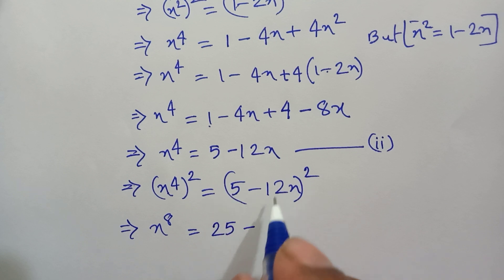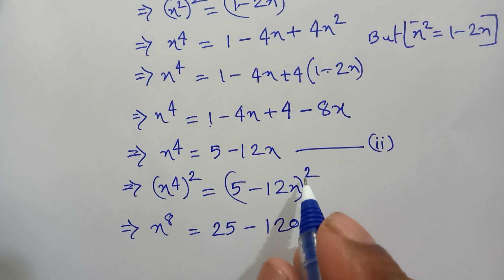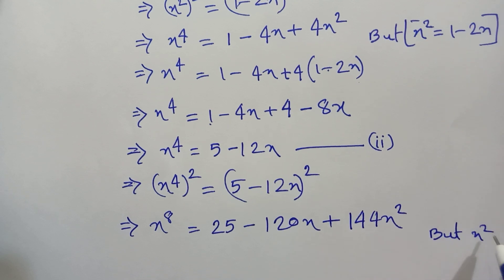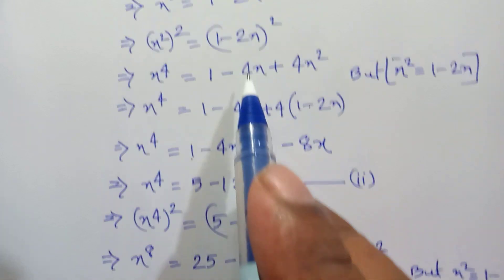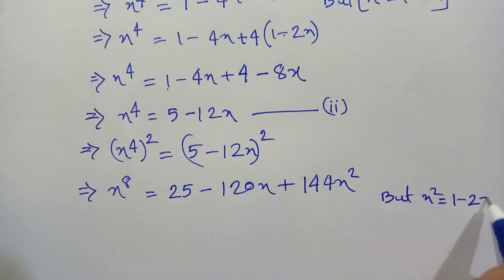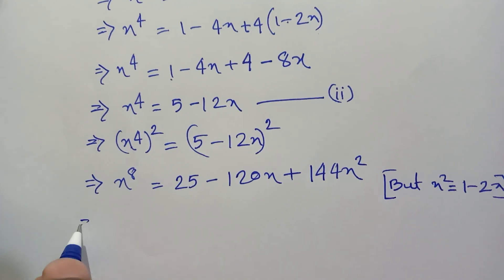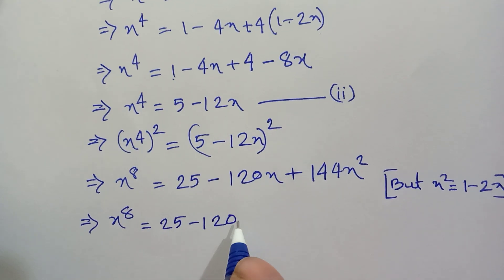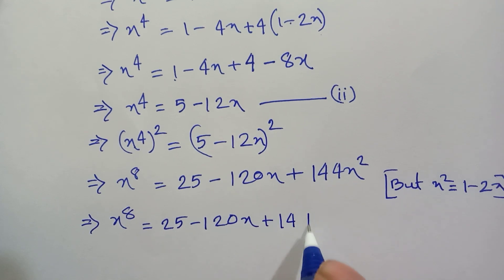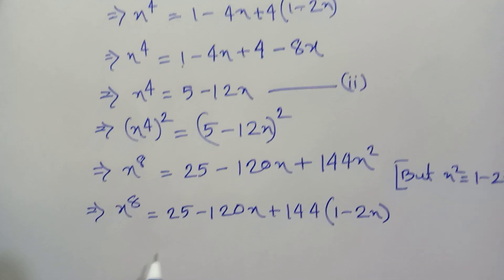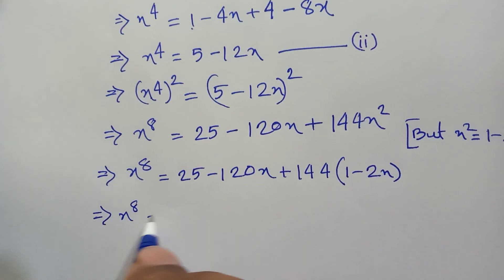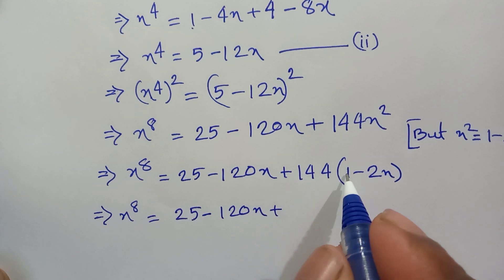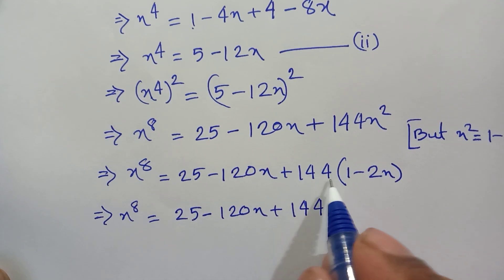We know x² = 1 - 2x, so we substitute 144x² = 144(1 - 2x). Therefore x⁸ = 25 - 120x + 144(1 - 2x) = 25 - 120x + 144 - 288x.